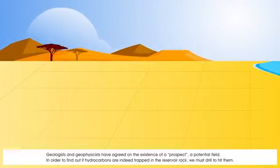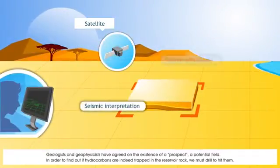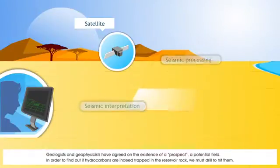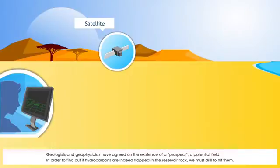Geologists and geophysicists have agreed on the existence of a prospect, a potential field. In order to find out if hydrocarbons are indeed trapped in the reservoir rock, we must drill to hit them.